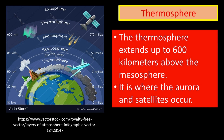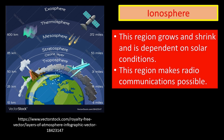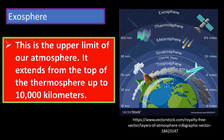Number four, the Thermosphere. The Thermosphere extends up to 600 kilometers above the Mesosphere, and it is where the aurora and satellites occur. Number five, the Ionosphere. The Ionosphere is the part of our atmosphere where abundant layers of electrons, ionized atoms and molecules occur. It extends from about 48 kilometers above the surface to about 95 kilometers, grows and shrinks depending on solar conditions, and is a critical link in Sun-Earth interactions — making radio communications possible. Lastly, number six, the Exosphere. This is the upper limit of our atmosphere, extending from the top of the thermosphere up to 10,000 kilometers.